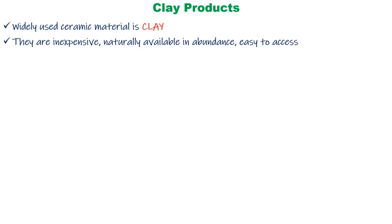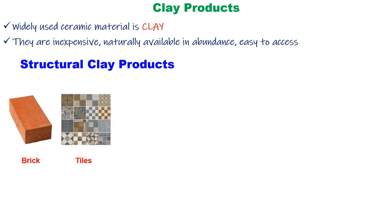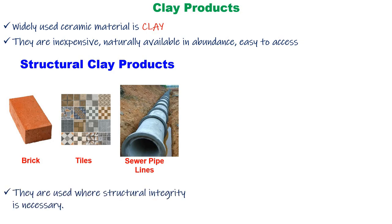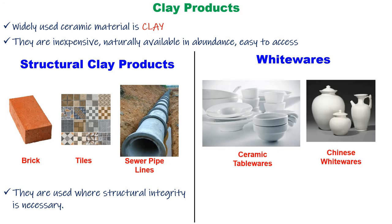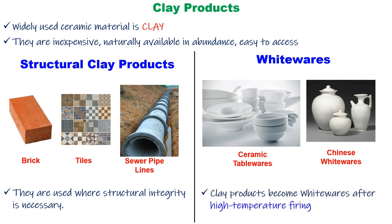Clay products: the widely used ceramic material is clay. They are inexpensive because they are available in nature in abundance and easy to access. Clay products are classified into two categories: structural clay products, which include bricks, tiles, and sewer pipelines used where structural integrity is required; and white wares, such as ceramic tableware or Chinese white wares, which are made by firing clay products at higher temperatures.